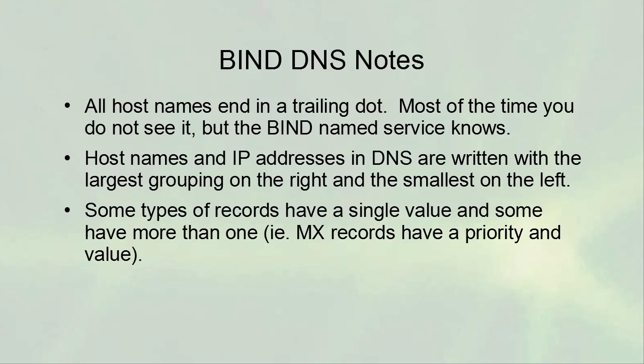Hostnames and IP addresses in DNS are written with the largest grouping on the right and the smallest on the left. For example, in a name like example.com, 'com' is the larger grouping and is on the right. For IP addresses like 10.11.12.13, the '10' is the largest grouping, but DNS wants it on the right. So in DNS format, 10.11.12.13 would be written as 13.12.11.10.in-addr.arpa.